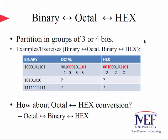The conversion between binary, octal, and hexadecimal number systems is quite straightforward. We partition the binary sequence into groups of three bits for octal and four bits for hexadecimal with respect to the radix point, as illustrated by the example table. For octal-to-hexadecimal conversion, one way is to convert the octal number to binary first, then convert the binary to hexadecimal.